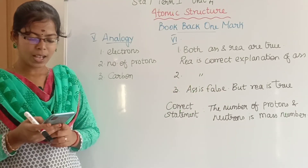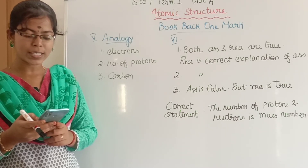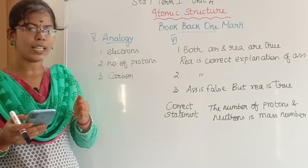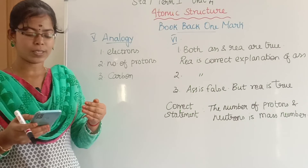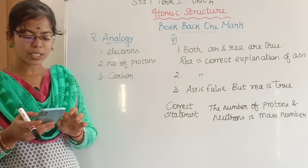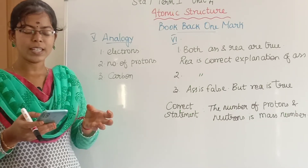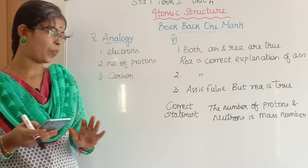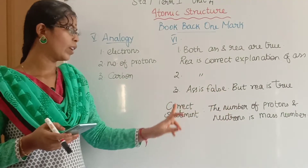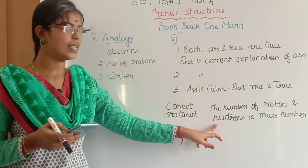Third assertion-reason question: the assertion is false. The correct statement is that the number of protons and neutrons gives the mass number.